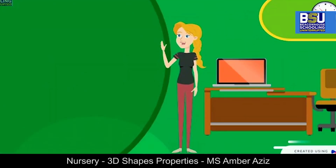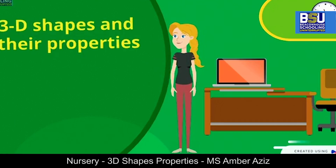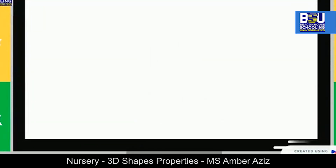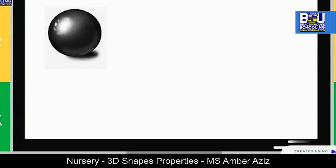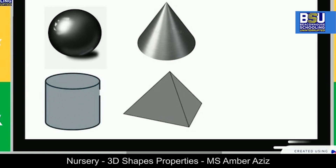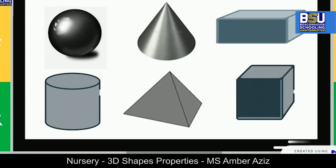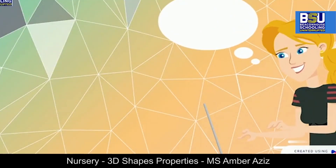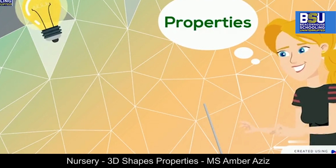Hello kids, how are you? Hope you all are fine. Today we will learn about 3D shapes and their properties. Let's recall the shapes first. Which shape is this? Yes, it's a sphere. This one — cylinder. Now cone, pyramid — very good! Cuboid, cube. That's great!